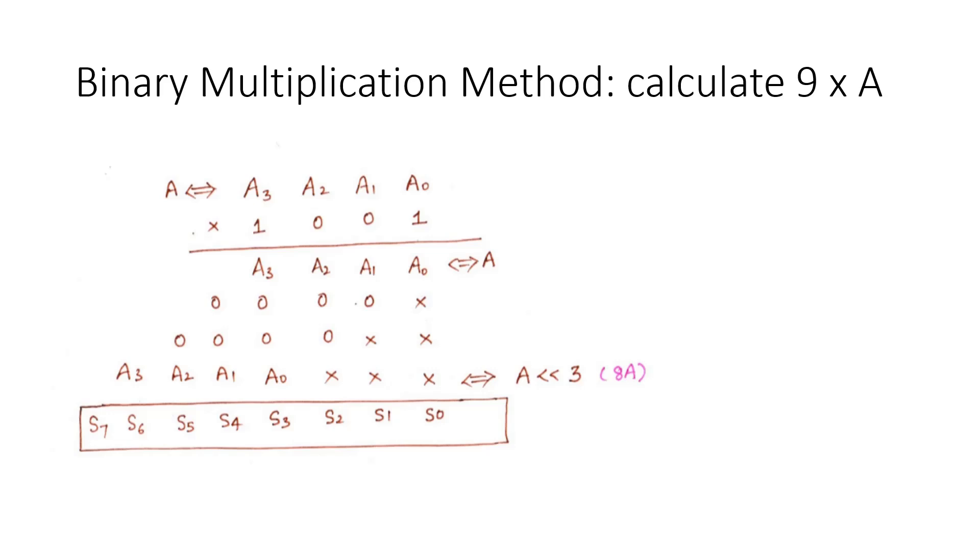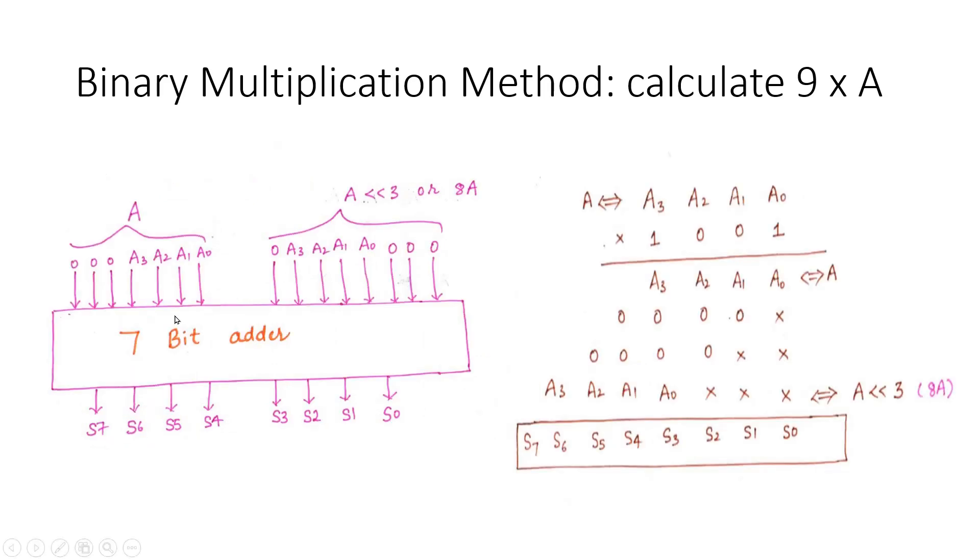Friends, now let us see its final logic diagram which is very simple. I will take care of a 7-bit adder and I will apply A vector as one input and three bit shifted version of A, that is 8A, to the second input.